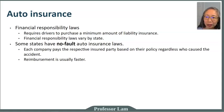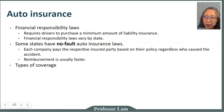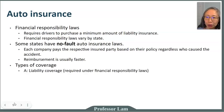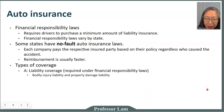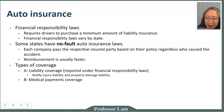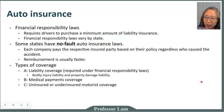Next we're going to go over different types of coverage. In general, there is Part A, which is liability coverage — this covers another driver in case of an accident and is required under the financial responsibility law if that applies to your state. Part B is medical payment coverage. Part C is uninsured or underinsured motorist coverage, and Part D is collision and comprehensive damage.